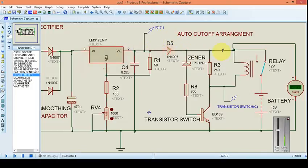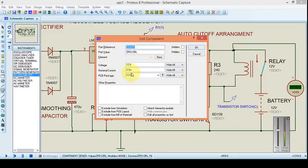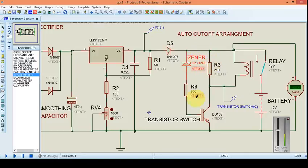Now next is the auto cutoff arrangement. You can see the zener diode, these two resistors, the relay, and a transistor switch. Now how does it actually work? As you can see, this zener diode starts conducting when the voltage goes above 12 volts. When it starts conducting, the base of this transistor switch gets some current. When the current at the base exceeds a certain limit, it starts conducting and as a result this point is connected to the ground.